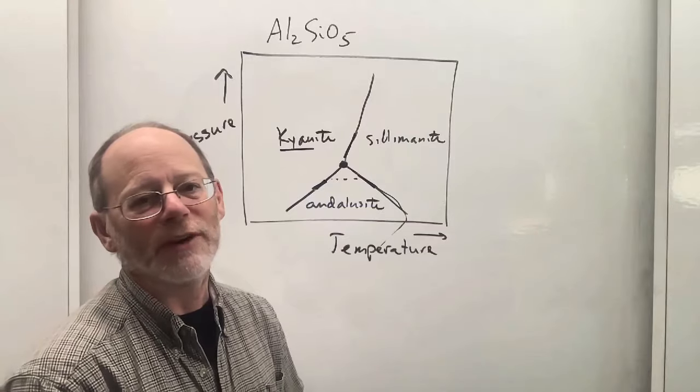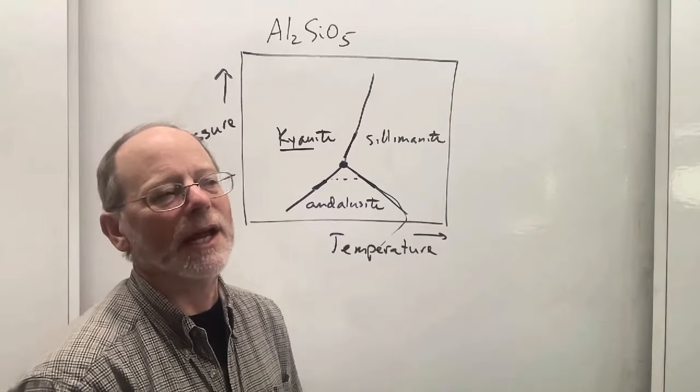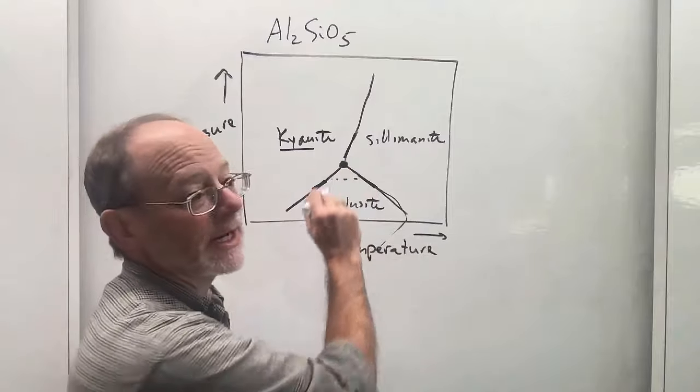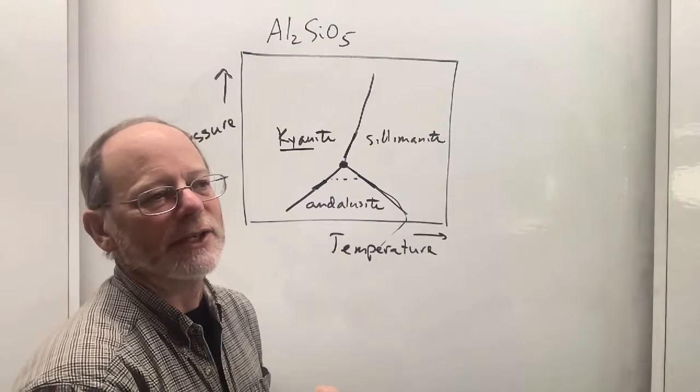Now, we do have rocks where all three aluminous silicates are present, but they're not in equilibrium. One of them formed earlier, one formed at an intermediate time, and one of them is texturally late. So theoretically, you could have all three. We just don't know any examples in nature where that occurs.